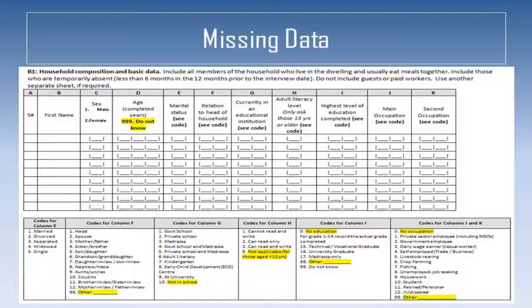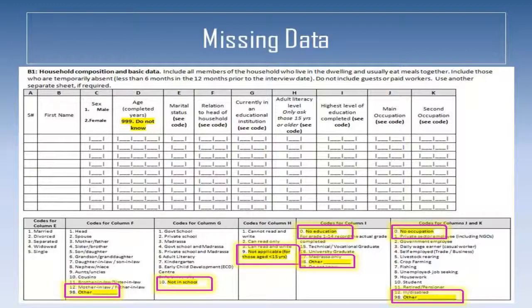Avoid collecting missing data. For categorical variables ensure the group responses cover all options, for example when asking about highest level of education obtained, include a category for no education so that these responses are not collected as missing. You can also add NA and other codes with space to add the details.